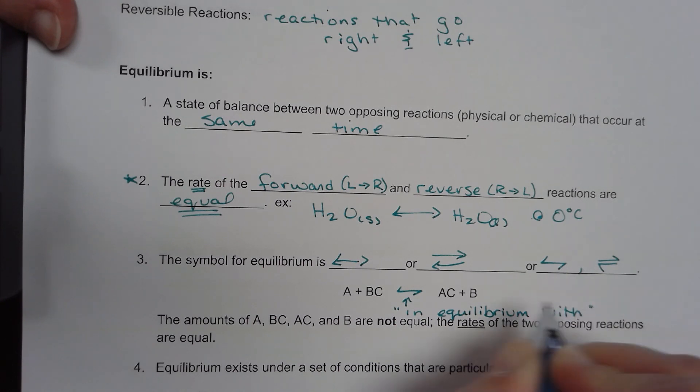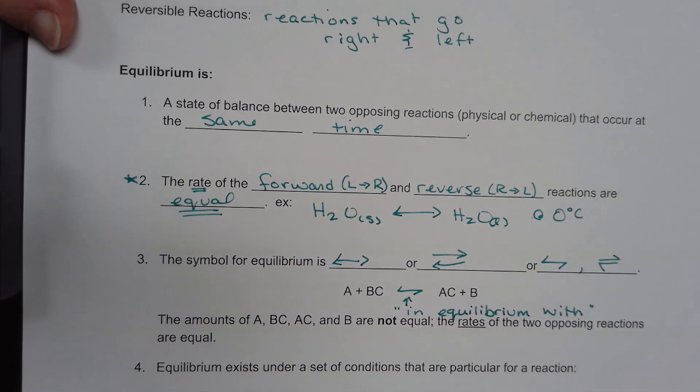A plus BC is in equilibrium with AC plus B. The amounts are not equal. The rates of the two opposing reactions are equal.